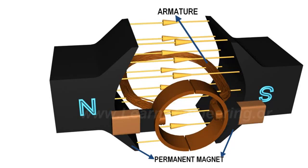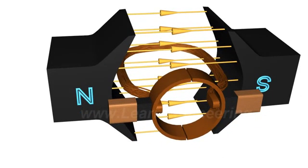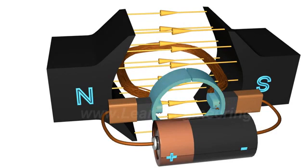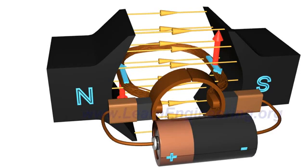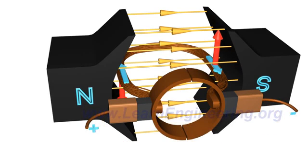The armature is connected to a DC power source through a pair of commutator rings. When the current flows through the coil, an electromagnetic force is induced on it according to the Lorentz law, so the coil will start to rotate.